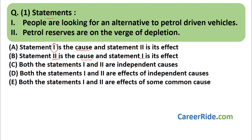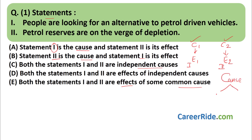Option three: both statements are independent causes — neither is an effect, and they are not related to each other. Option four: both statements are effects of independent causes — there are two separate causes C1 and C2, each producing its own independent effect. Option five: both statements are effects of some common cause.